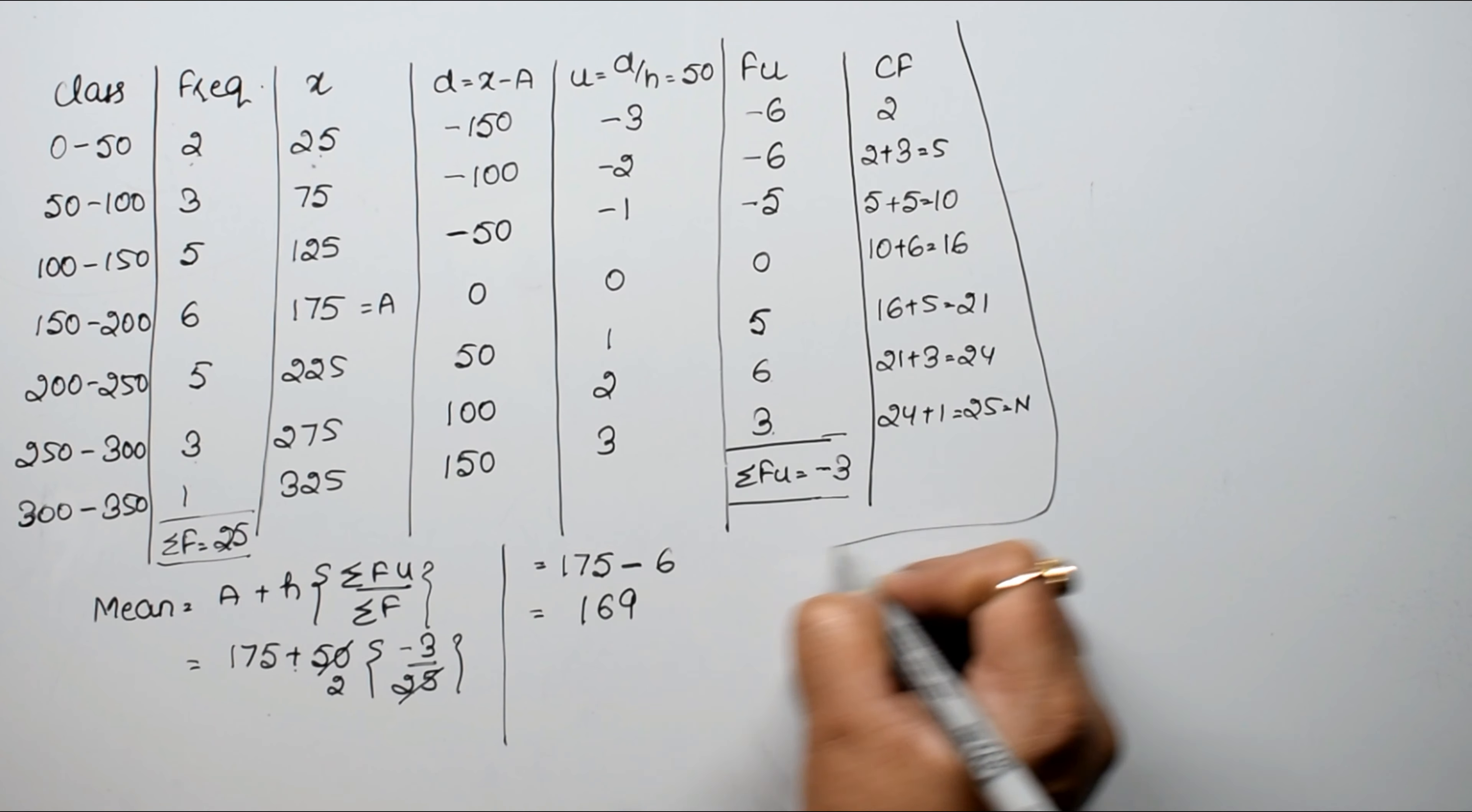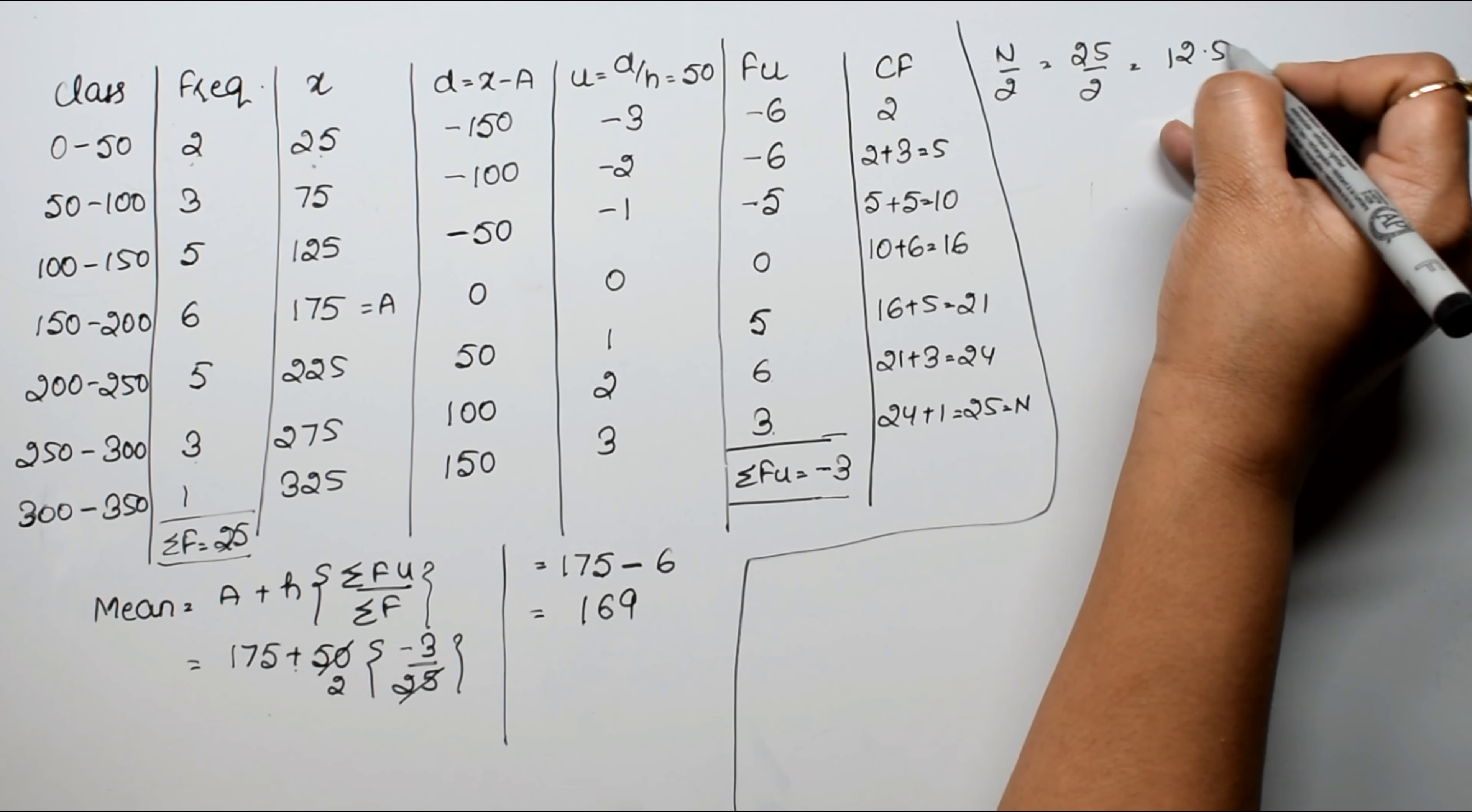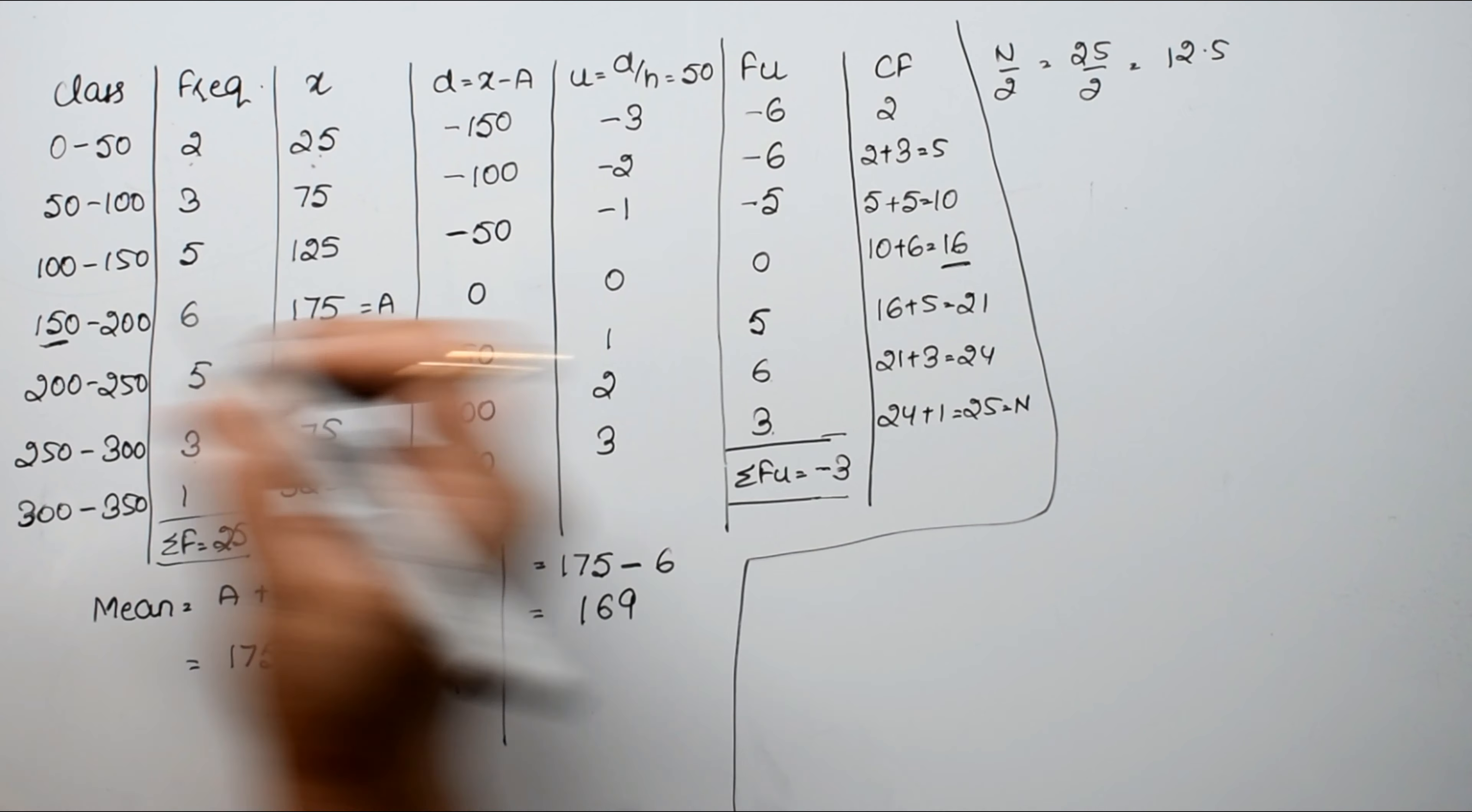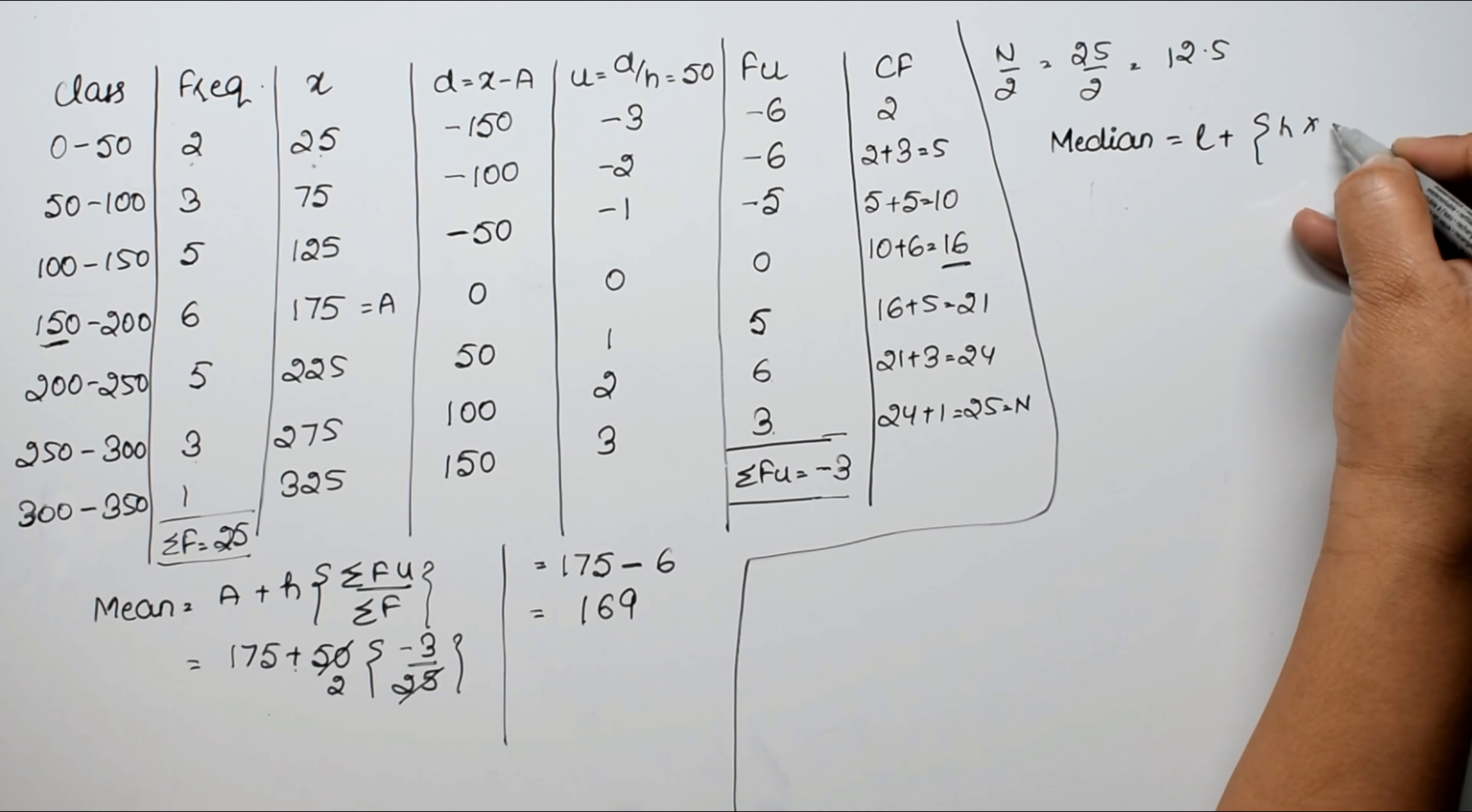So now we will find n by 2. n by 2 is 25 by 2, that is 12.5. Now 12.5 lies here, and its lower limit is this. So median formula is: median equals to l plus h into n by 2 minus cumulative frequency upon frequency, right?